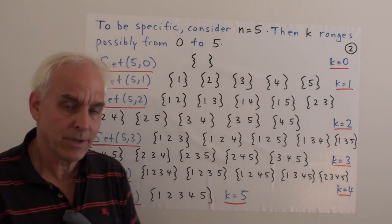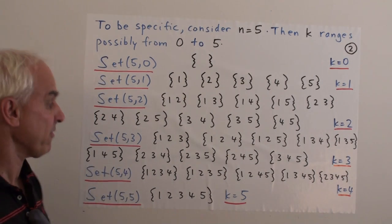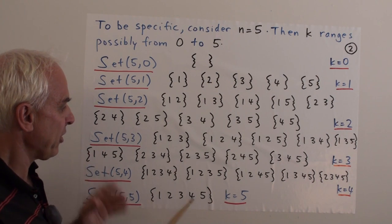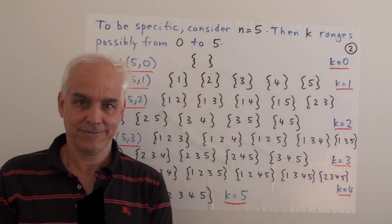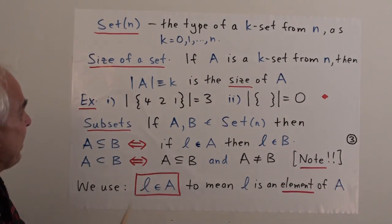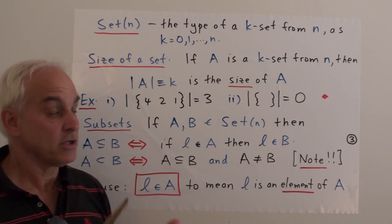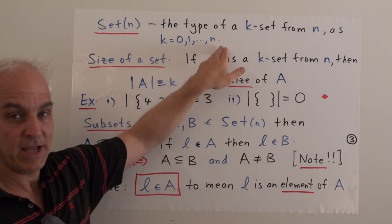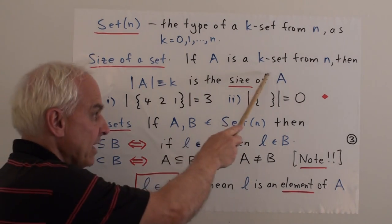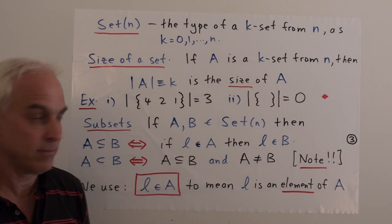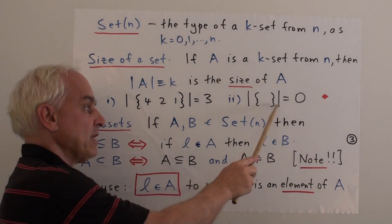It's a very nice and important structure. These objects occur in many different places, especially in algebra and the binomial theorem. We introduce the type set(n), which refers to all sets from n — k-sets where k ranges from zero up to n. The size of a set: if a is a k-set from n, then the size of a is k by definition. For example, the size of {4,2,1} is three, and the size of the empty set is zero.